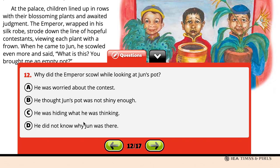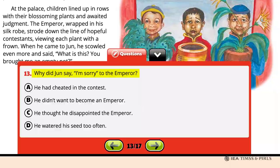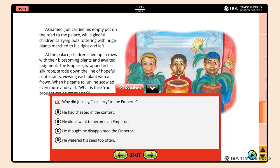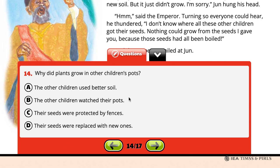Question 13 asks why Jun said "I'm sorry" to the Emperor. The correct answer is Option C: He thought he disappointed the Emperor. To answer Question 14 — Why did plants grow in other children's pots? — students recognize that their seeds were replaced with new ones, Option D.